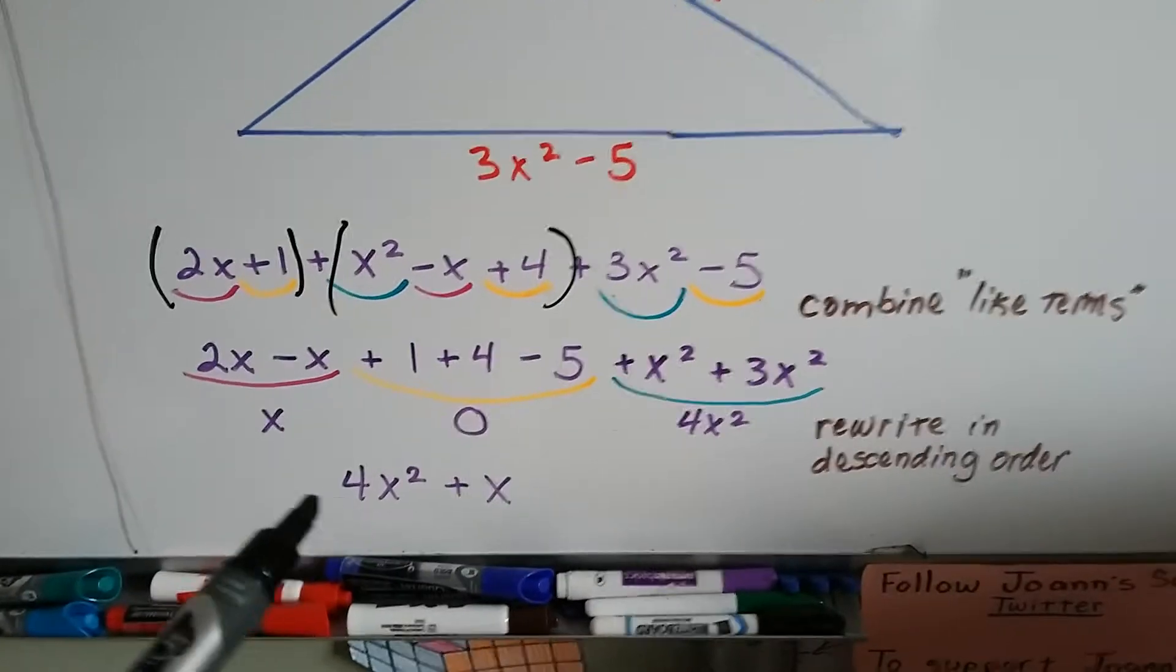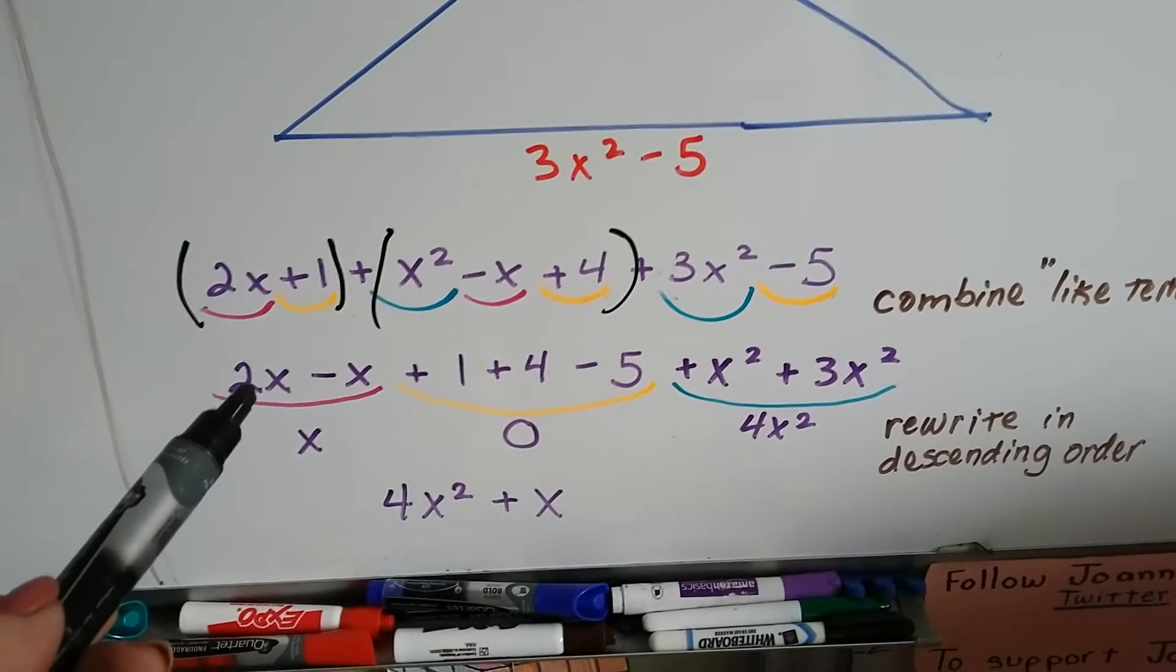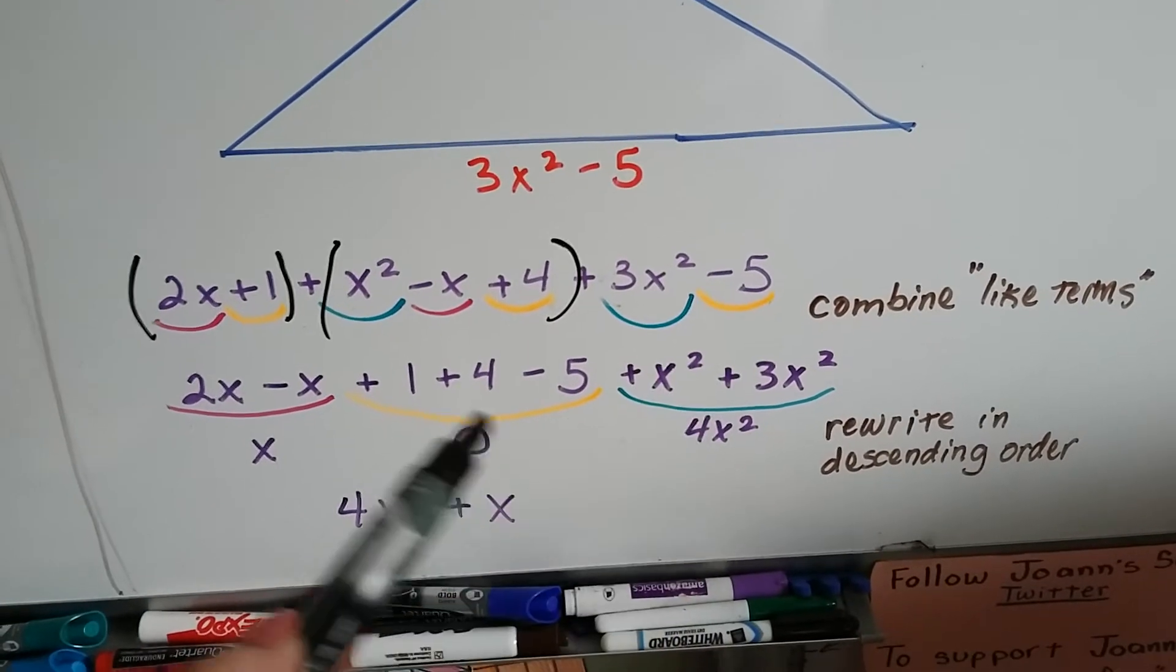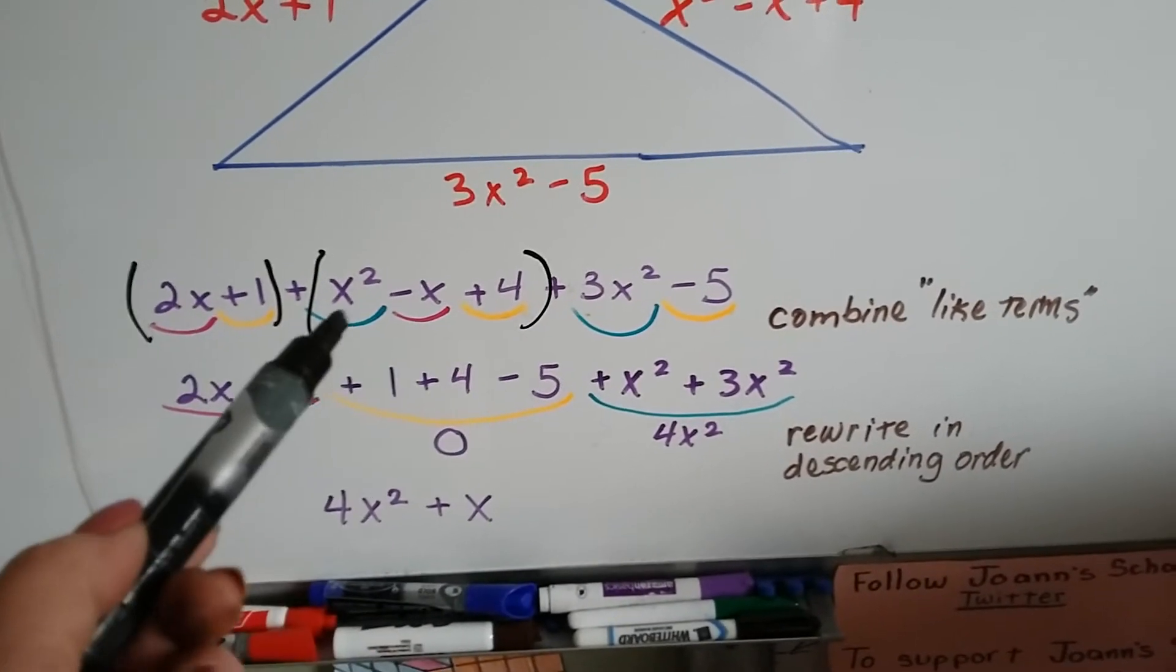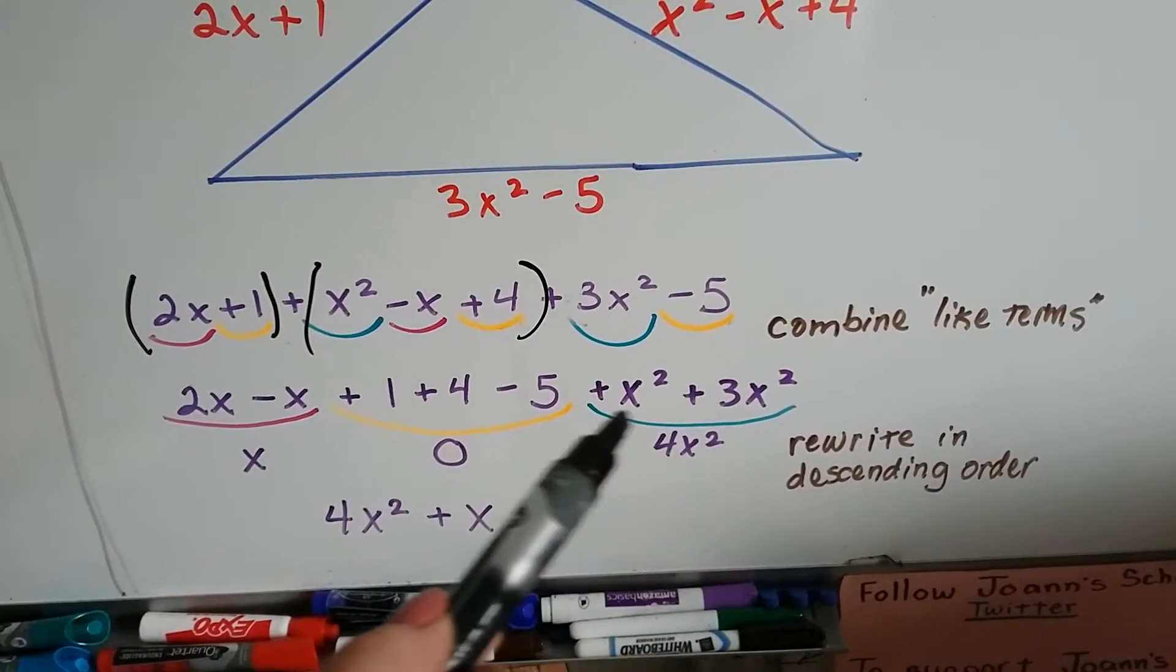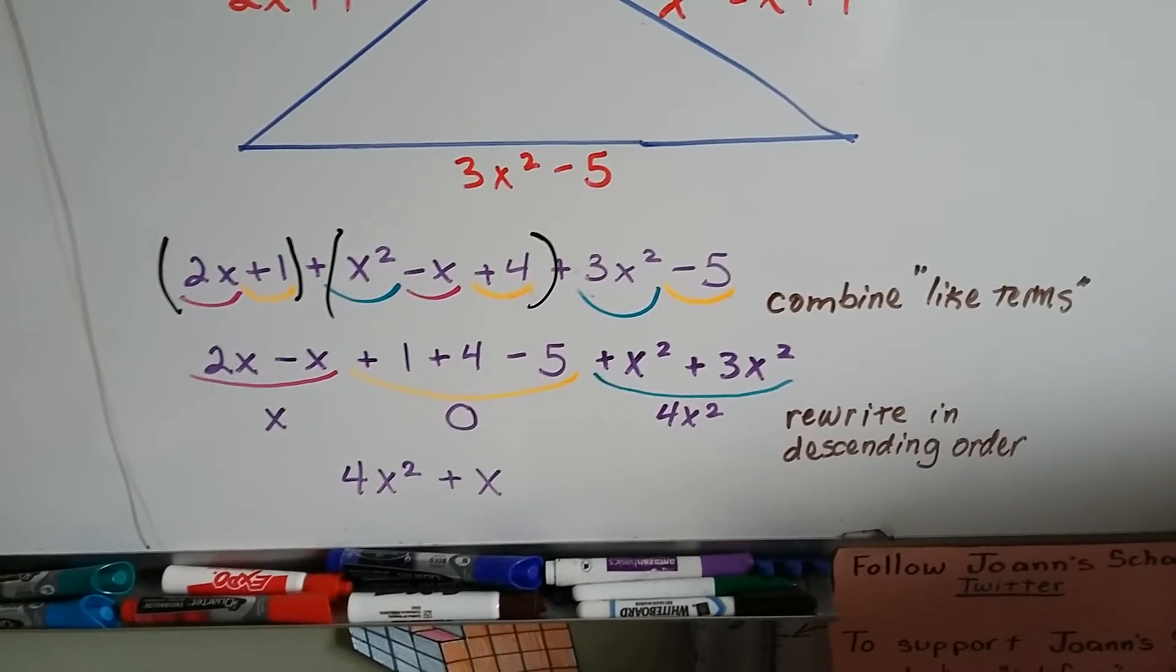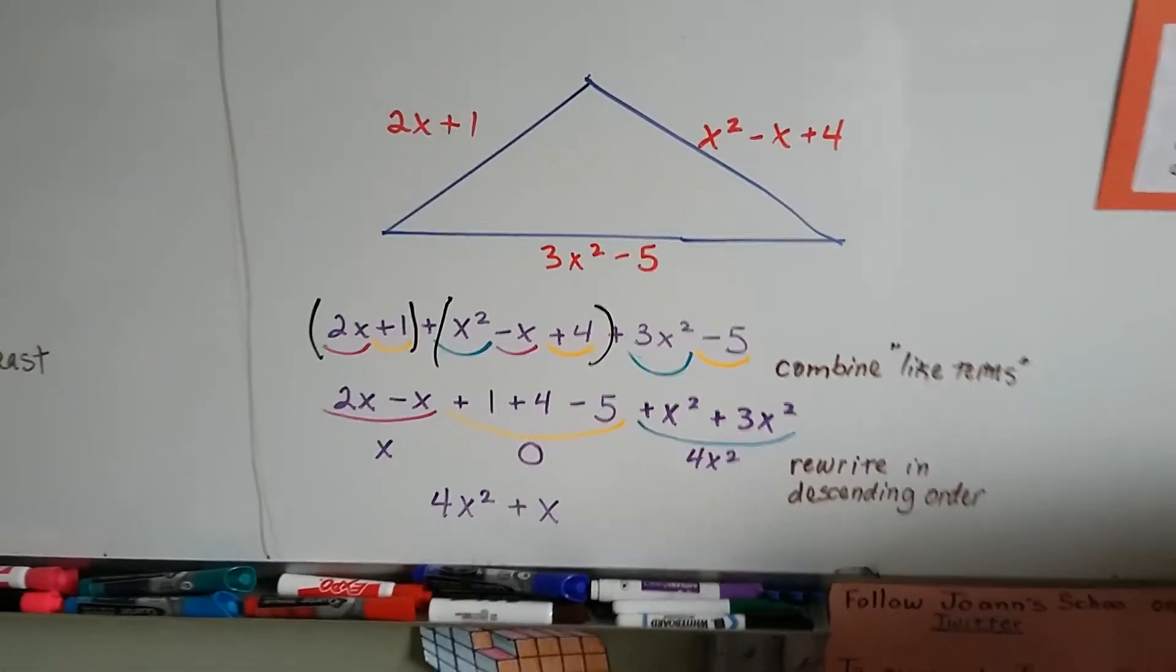So we can combine these like terms. We look for the like terms. Where do we see just an x alone? We see one here and we see one here. So now we've got 2x minus x, that's going to give us just an x. Now where do we see numbers by themselves? We see a plus 1, a plus 4, a minus 5. We can combine those. 1 plus 4 is 5, minus 5 is 0, so all the orange ones are 0. And then look at these teal colored ones. We've got x squared here plus a 3x squared here. Well, x squared plus 3x squared gives us 4x squared. So now we've got an x, a 0, and a 4x squared, and we need to write them in descending order. So we don't need to write that one because it's a 0, it's nothing. We can just ignore it and eliminate it. And then this has got the highest exponent for x, so we've got 4x squared plus x. That wasn't too bad, was it?